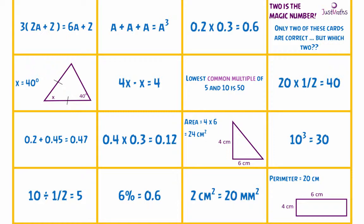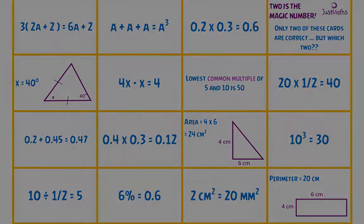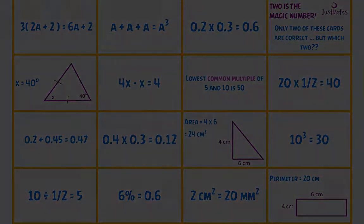I'm going to start one at a time. Ed, I'm going to come to you first. Have you spotted one that's wrong? Yep, in the second row, second column, we've got 4x minus x — I think it should be 3x. Okay, that's great. And Jean, have you spotted one? Thank you.